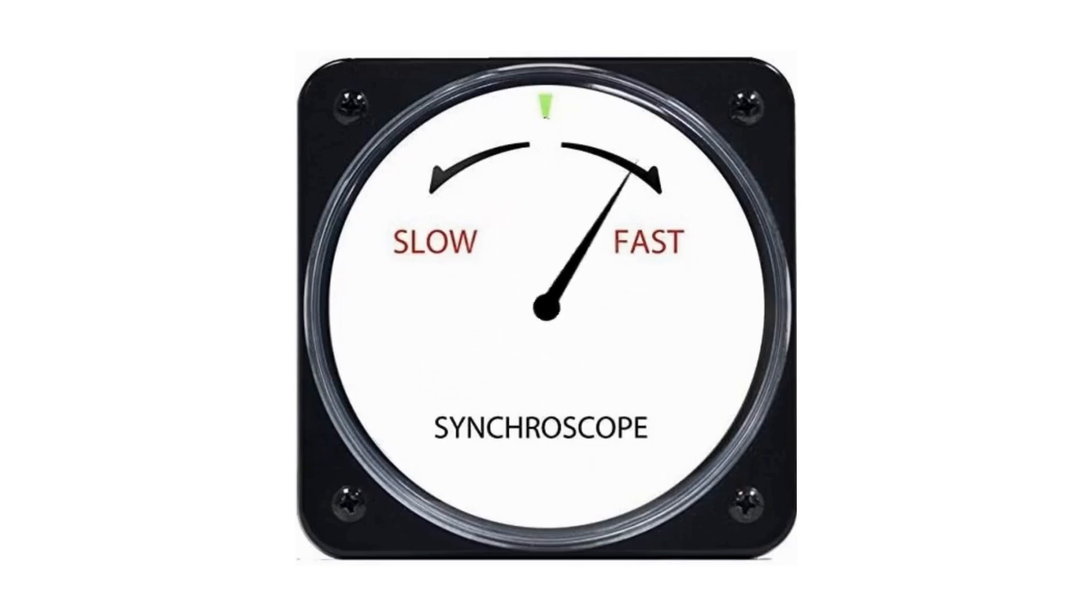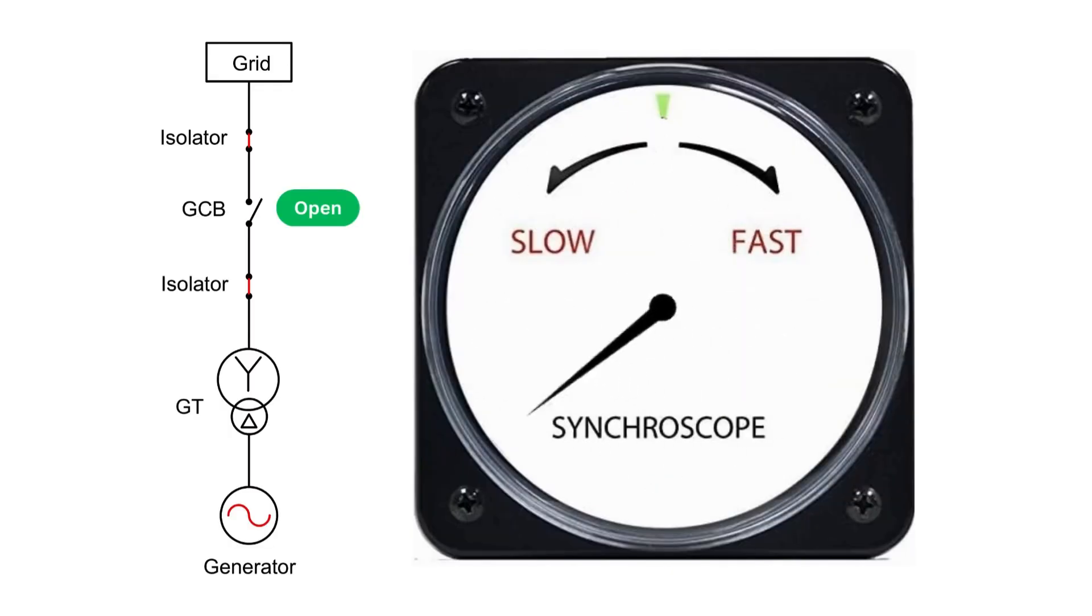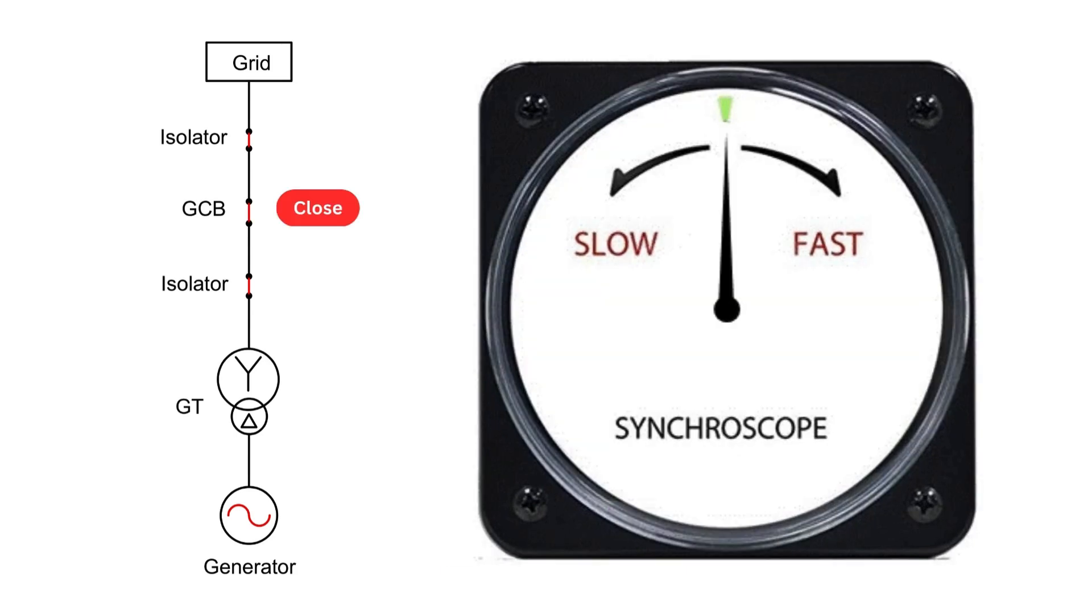The main role in this process is played by the synchroscope, which control room engineers monitor closely. As the synchroscope needle moves and reaches the 12 o'clock position, the operator gives a close command to the GCB or generator circuit breaker.